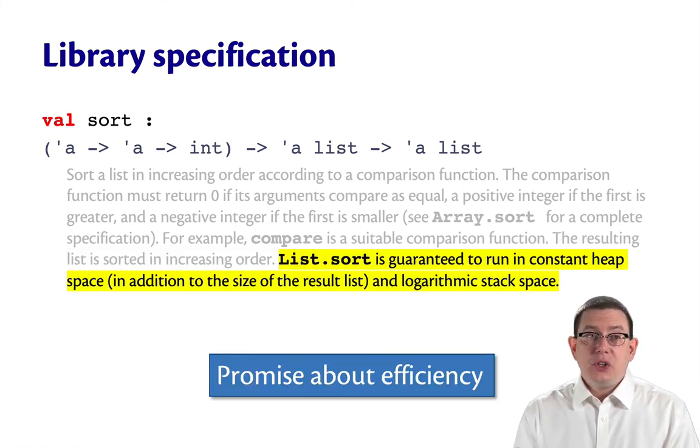The final sentence actually is another piece of the specification that is about the efficiency of it. This specification is promising that the sort is going to run in constant heap space and logarithmic stack space. So efficiency can be a part of the specification of a function. It isn't always, but it can be.